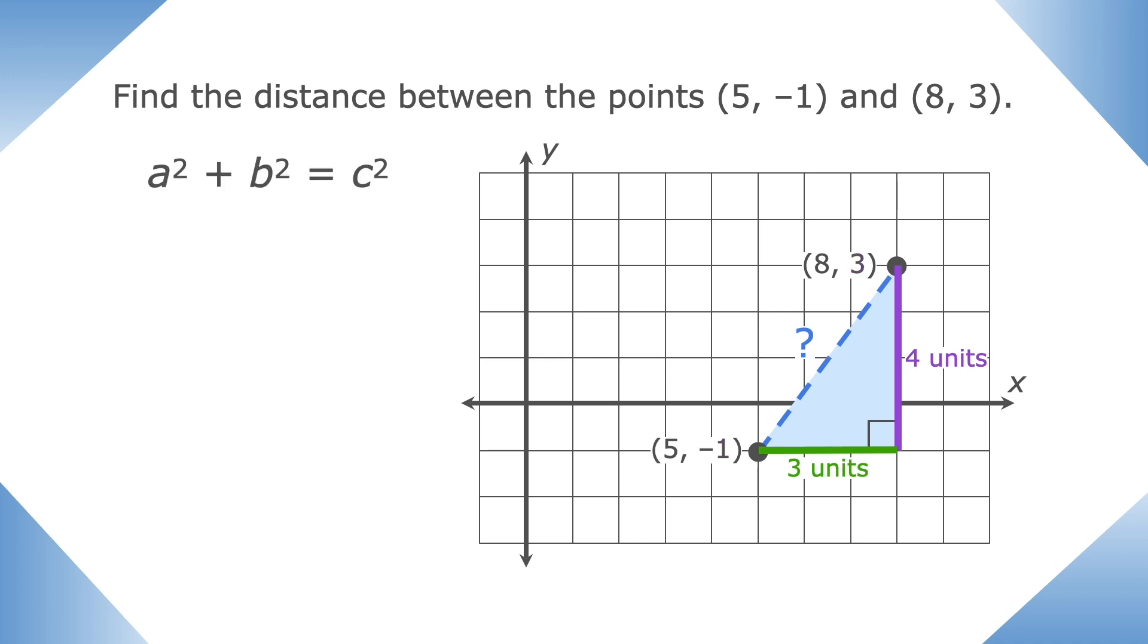Now we can use the Pythagorean theorem to find the distance between our points. Plugging in our values of 3 and 4 and simplifying, we get that the distance is 5 units. Great work.